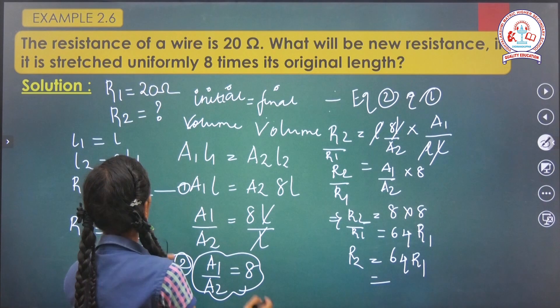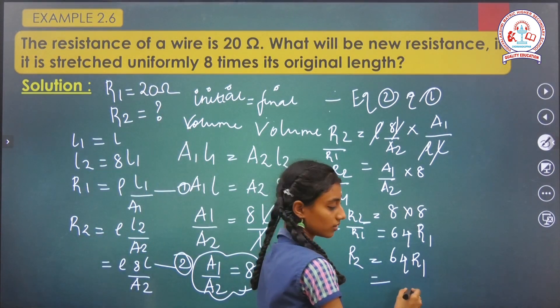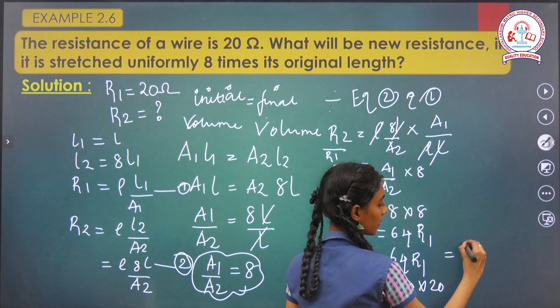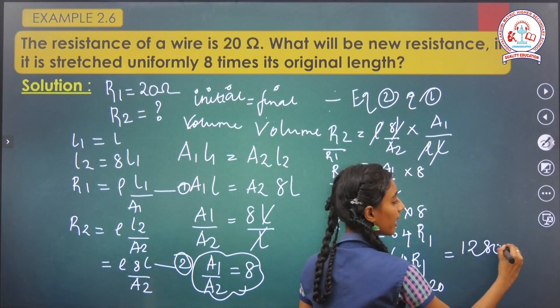We already know that R1 equals 20 ohms. Substitute these values: 64 into 20, which equals 1280 ohms.